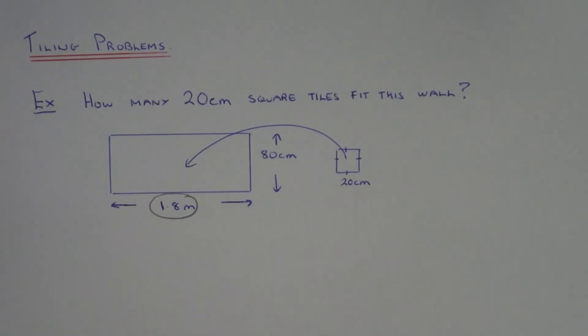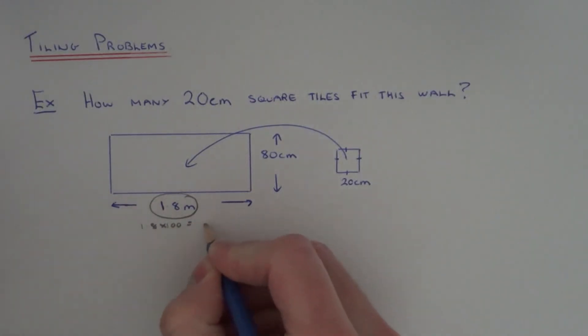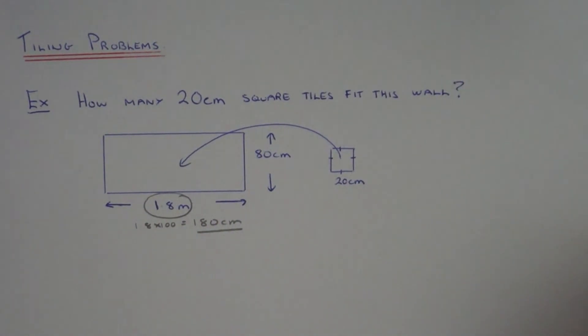Since we know that there is 100cm in a meter we can multiply the 1.8 by 100 which gives us 180cm. So going across the wall is 180cm.